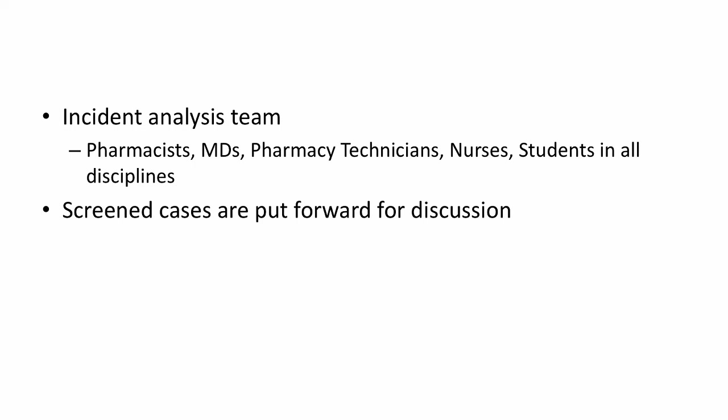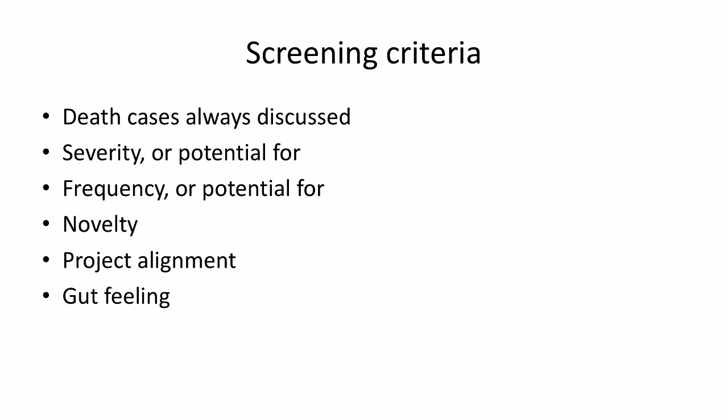Our Tuesday team consists of different types of people, all working on the shop floor. We use screening criteria to decide which of the 20,000 cases actually get discussed. We always talk about death cases, even if the report is sparse — maybe it triggers something. We look at severity: the more severe ones we're more likely to discuss, and also situations where something terrible could happen even if it hasn't yet.